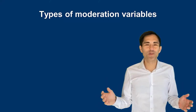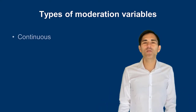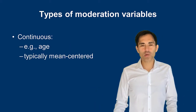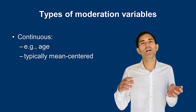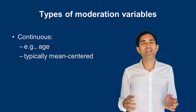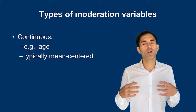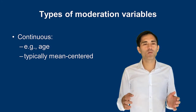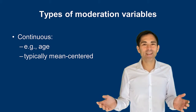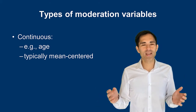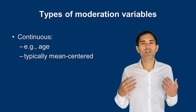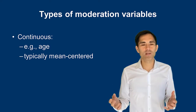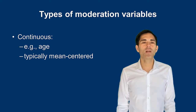There are different types of moderation variables. We can think of continuous variables, such as age, ranging from zero to 120. In social science research, we would typically convert these continuous variables into mean-centered variables — we compute the mean and subtract it from all values. Why? Because with small or medium-sized samples, failing to do so could result in multicollinearity, which would inflate and manipulate your results. That's why we mean-center variables in social science research.